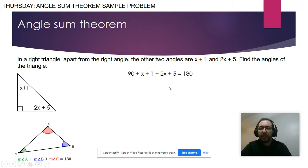Now this, we end up with an equation. We can solve the equation. Combine like terms first: 90 plus 1 plus 5 will be 96. x plus 2x will be 3x equals 180.